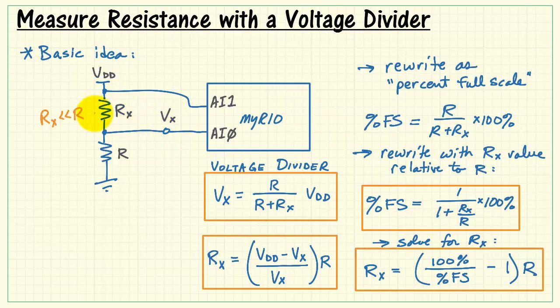Now let's consider what happens to Vx for different values of Rx. To get started, let's look at Rx much lower than the fixed resistance R. In this case, the resistor ratio goes to approximately zero, and we're left with essentially 100% full-scale. Alternatively, if we were just looking at Vx, we would see that Vx is at VDD.